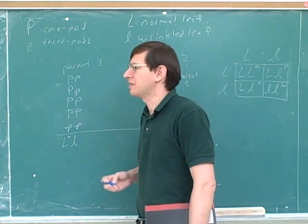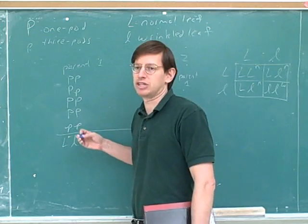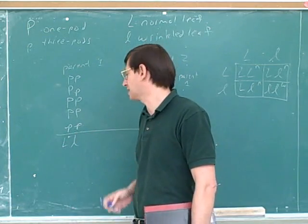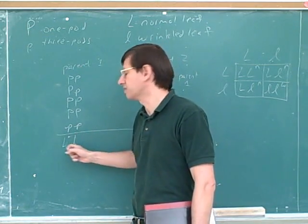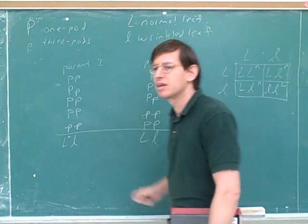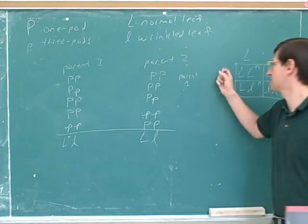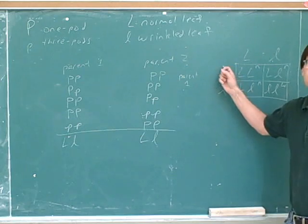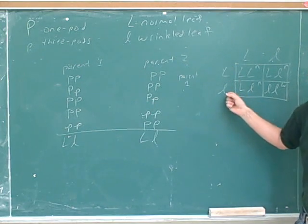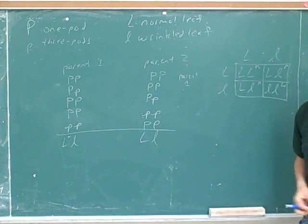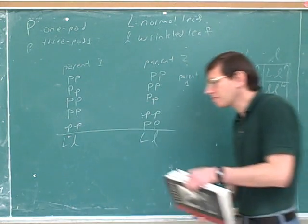Remember, segregation is when things are separated from each other. When in the somatic cells these alleles are together, but in the gametes they're separated into separate cells. That's all that they're saying.